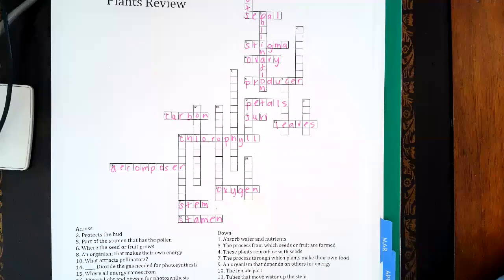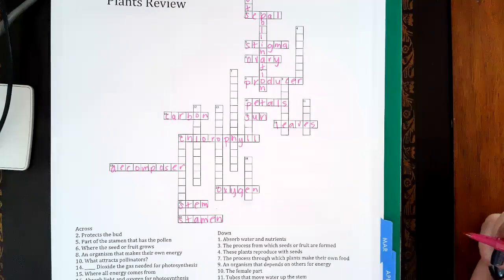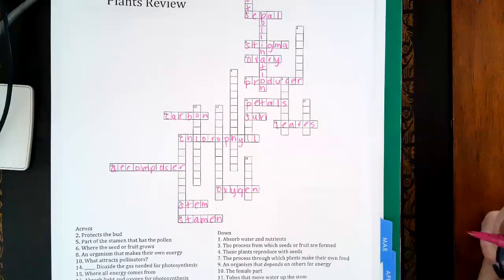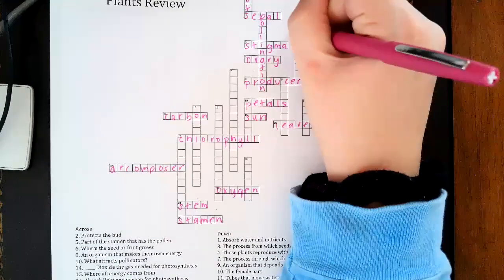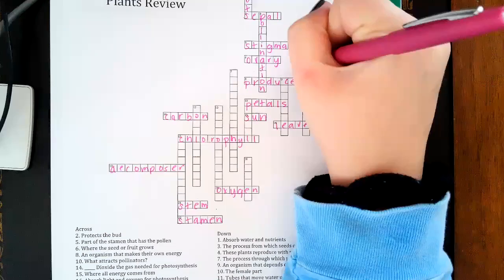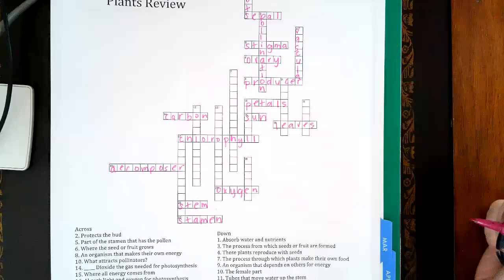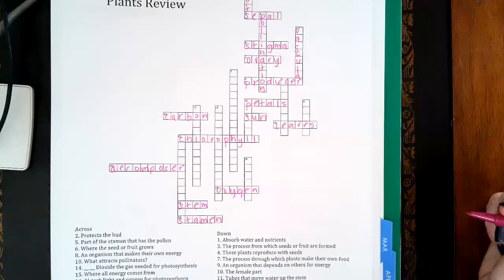Number four: plants that produce with seeds - those would be called vascular plants. The process where you make your own food - that is photosynthesis.